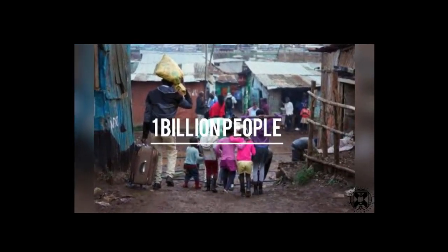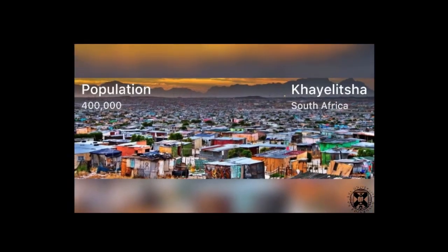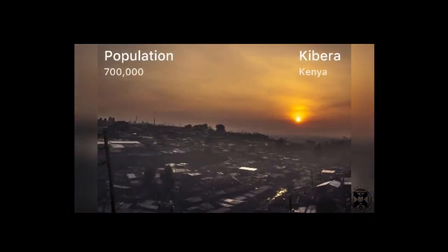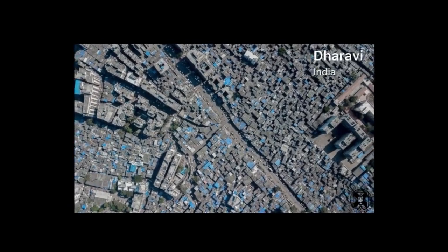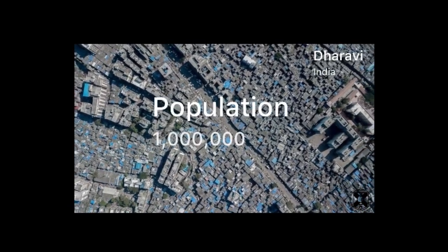These are some of the biggest informal settlements around the globe: Khayelitsha in Cape Town, South Africa; Kibera in Nairobi, Kenya; and Dharavi in Mumbai, India, which is home to more than 1 million people.